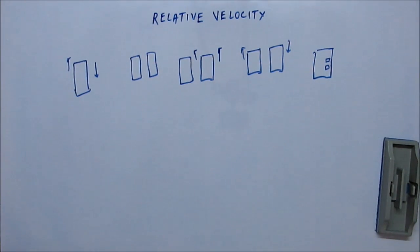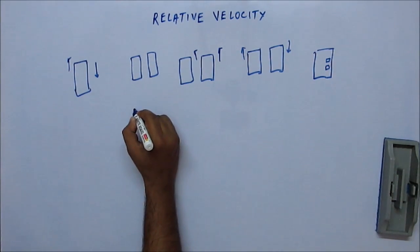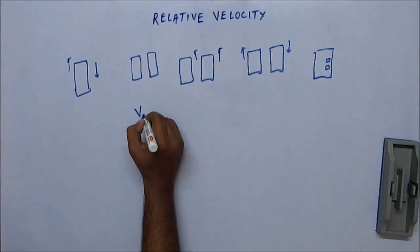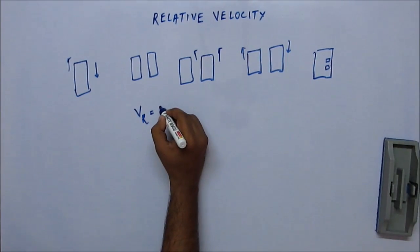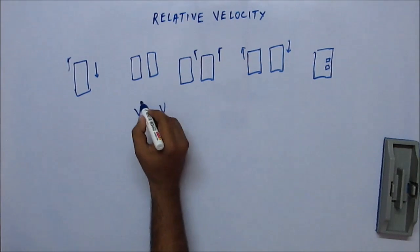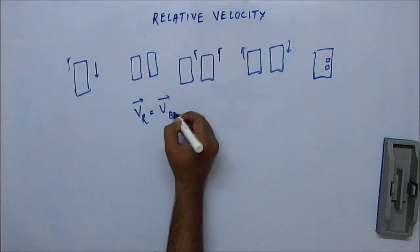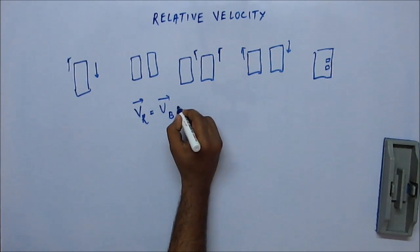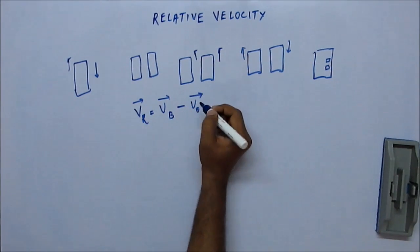Considering all these situations very intuitively, we can arrive at a formula: the relative velocity of a body with respect to an observer would be the velocity of that body minus the velocity of the observer.